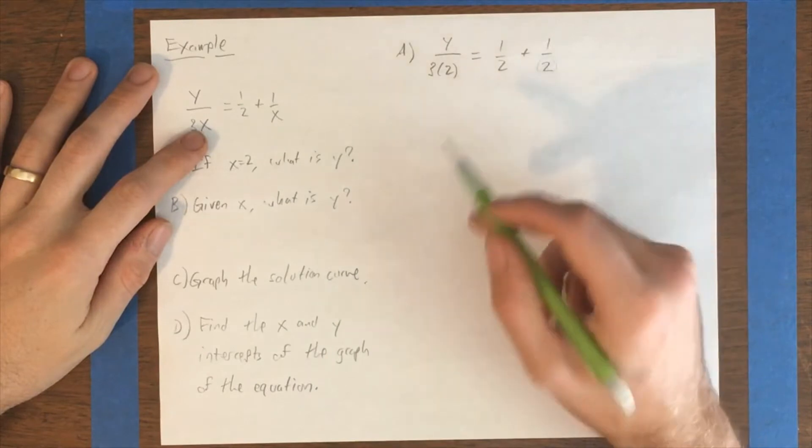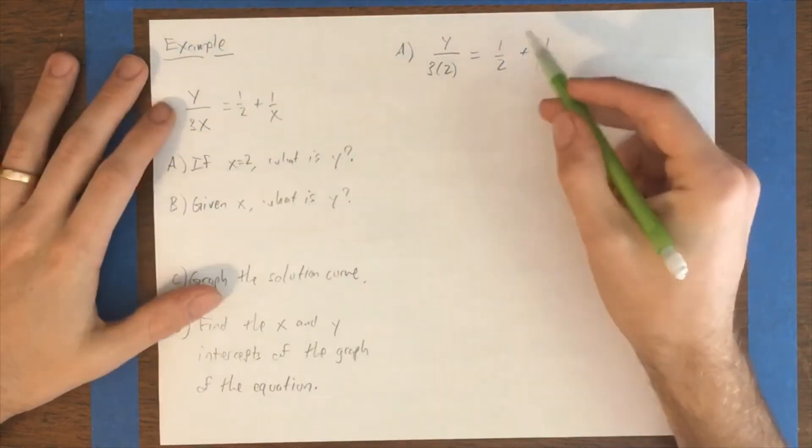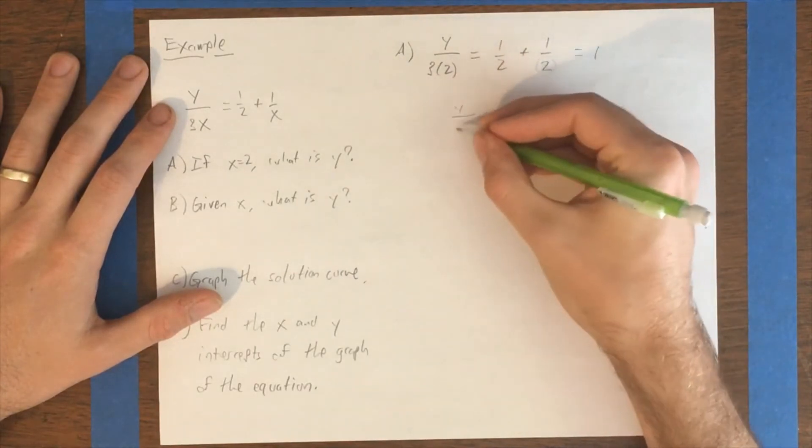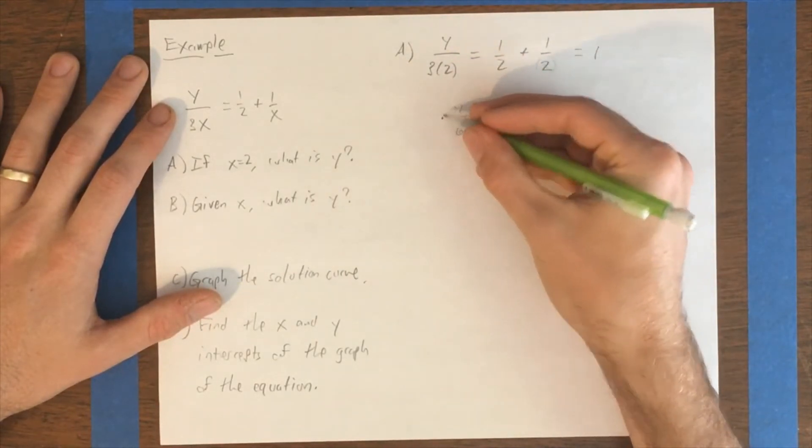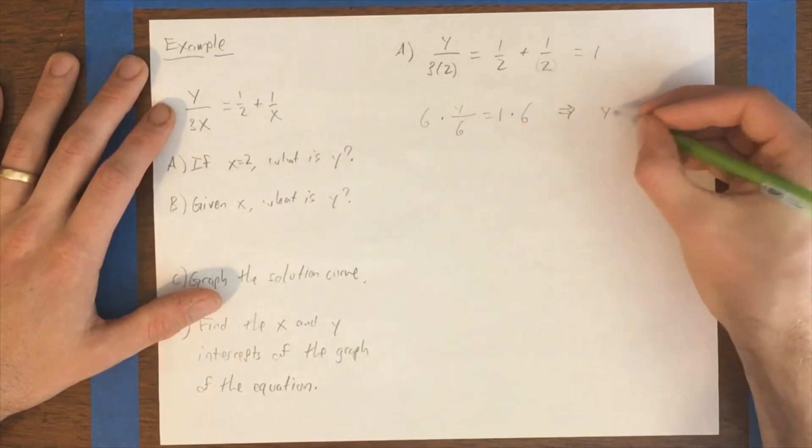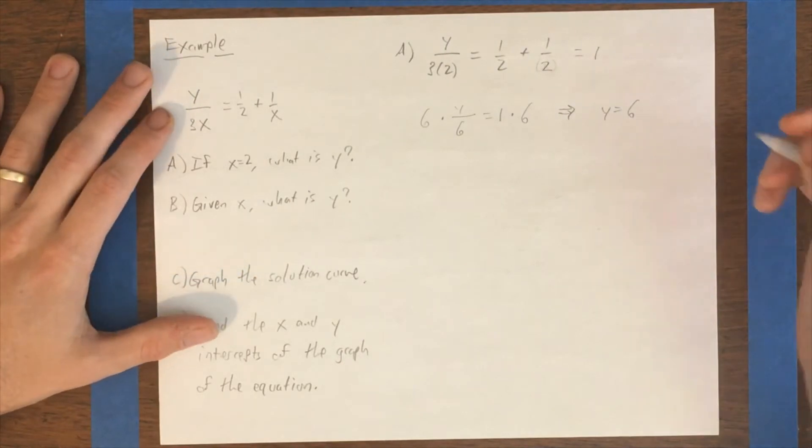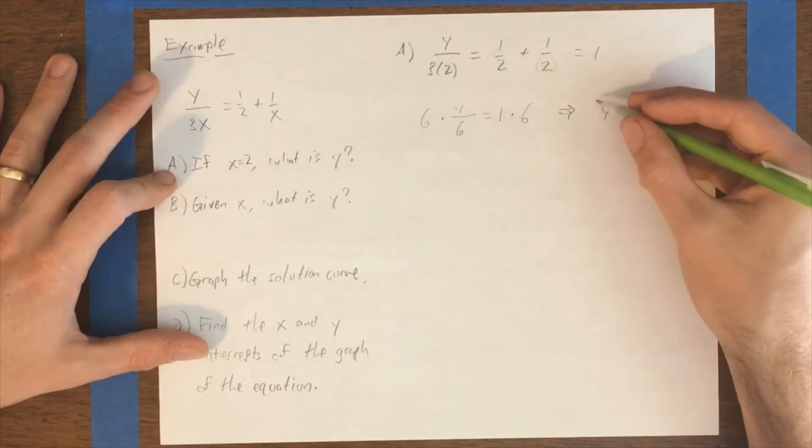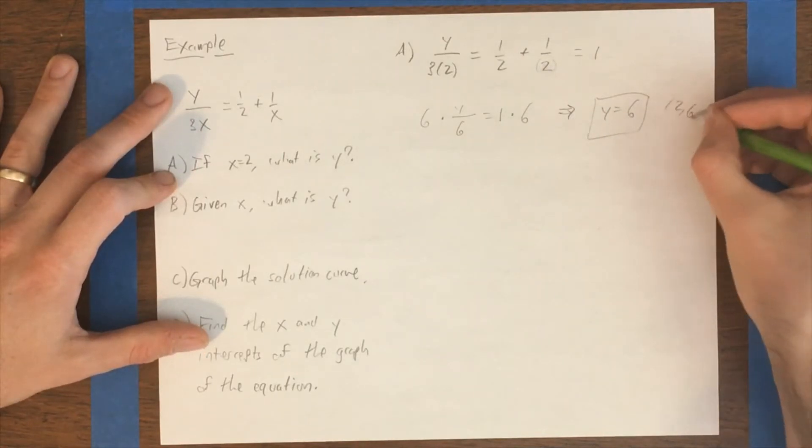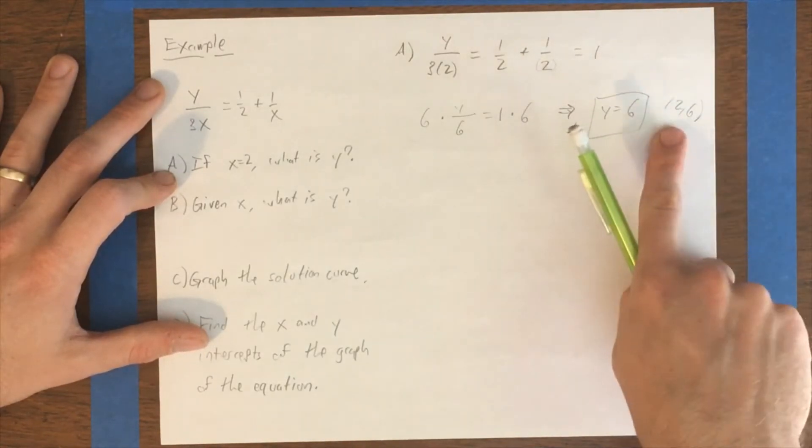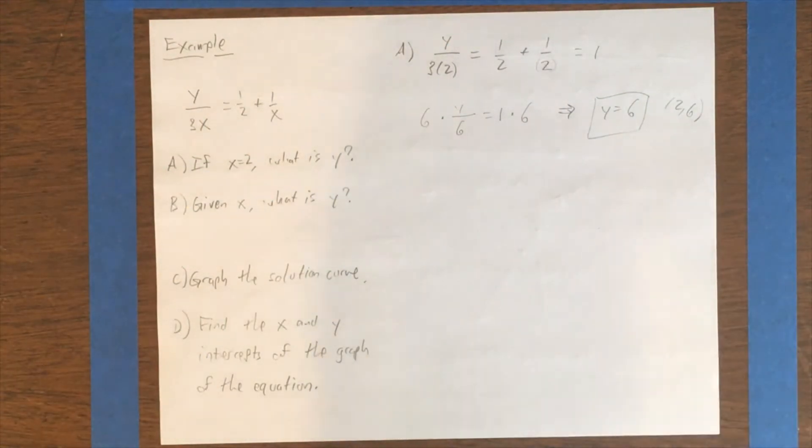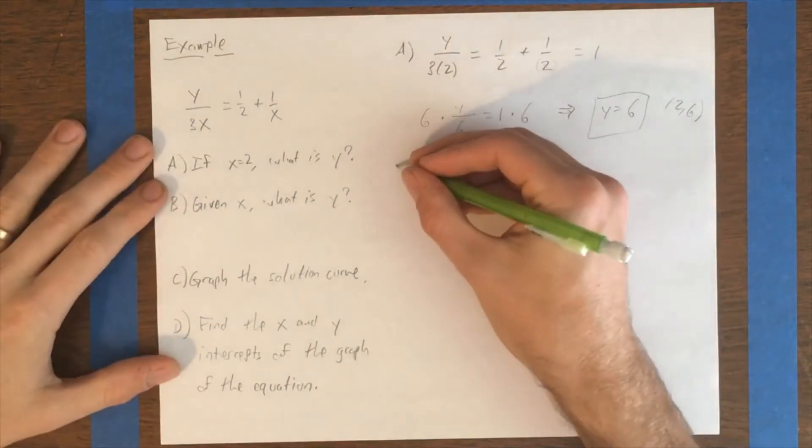So now I've done this, I want to solve for y. This is pretty easy. I have a half plus a half over here, so that's equal to 1. So if I take y divided by 6 equals 1 and multiply both sides of this equation by 6, then I have y equals 6. Great. So that means the answer to A: if x equals 2, what is y? Well, y would be 6. And that means the point (2, 6) is a solution to this equation and therefore will be a point on the graph of that equation.